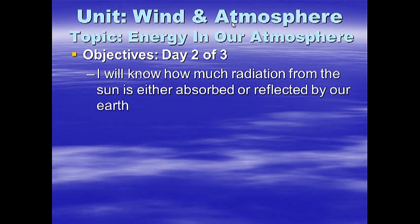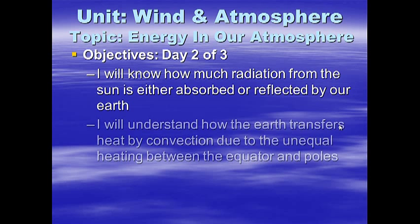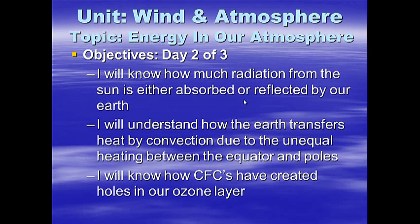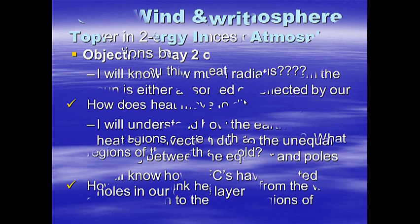Welcome back to our unit on wind and atmosphere. Today we're going to look at energy in our atmosphere and also CFCs and how they're affecting our atmosphere. Our objectives for day two of three: you will know how much radiation from the Sun is either absorbed or reflected by our Earth, you will understand how the Earth transfers heat by convection due to unequal heating between the equator and poles, and you will know how CFCs have created holes in our ozone layer.